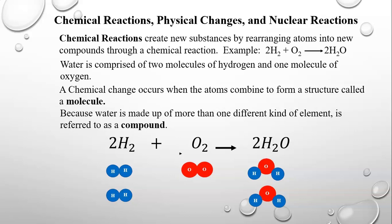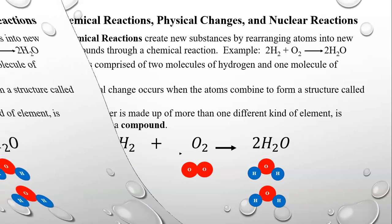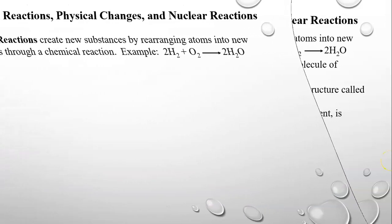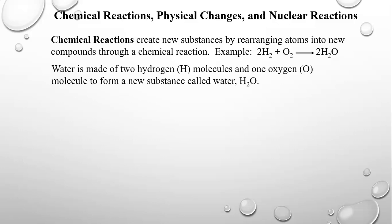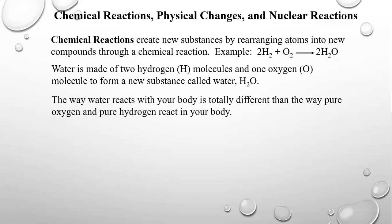Chemical reactions create new substances by rearranging atoms, just like letters of the alphabet arranged in different ways form different words. Water is made of two hydrogen molecules and one oxygen molecule to form H₂O — a new substance whose properties are totally different from pure hydrogen or pure oxygen.